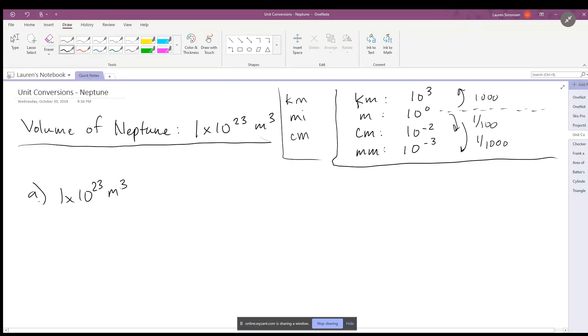So you can also think of it as there are 100 centimeters in a meter or there are 1,000 meters in a kilometer. So let's get started. This is what we're starting with: we're starting with meters cubed and we want to go to kilometers cubed.